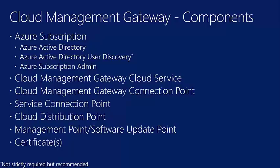You need a service connection point running in online mode — this handles all CMG deployment tasks, monitors and reports service health, logging, and so on. The cloud distribution point has historically been a separate Azure component, but the CMG now includes the ability to also function as a cloud distribution point, so you can deploy one service and get both. You also need a management point and, for software updates, a software update point.